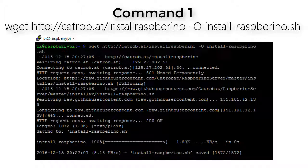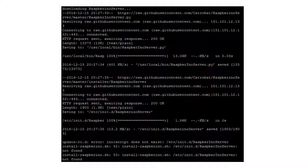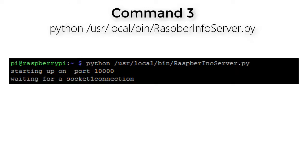Now you need to enter three commands. Type the first command, then type the second command to install the Raspberry Pi server. It might take a few seconds to establish the connection between the Raspberry Pi and your device. Keep in mind that both your Raspberry Pi and your mobile device have to be connected to a wireless LAN.